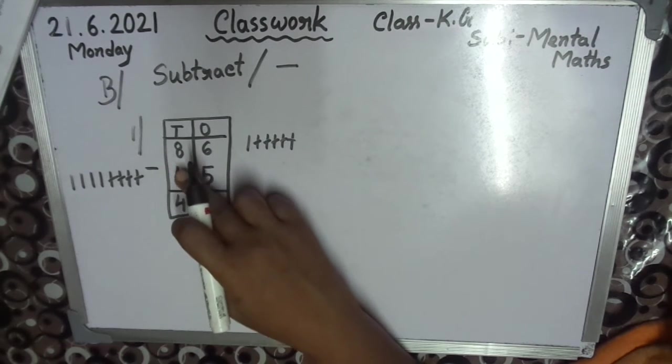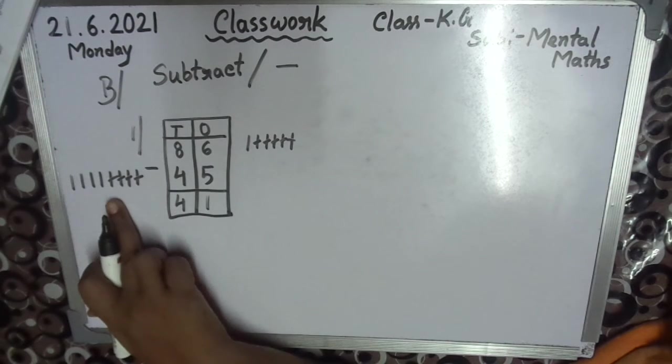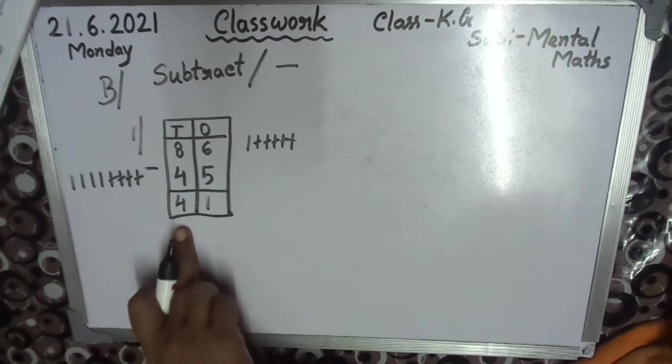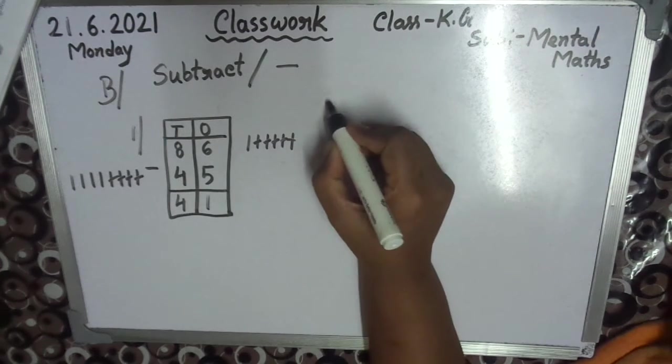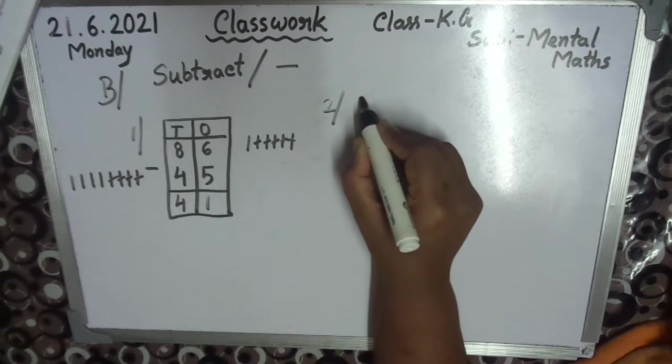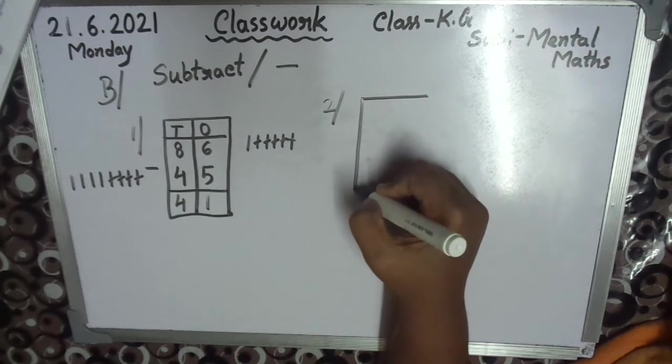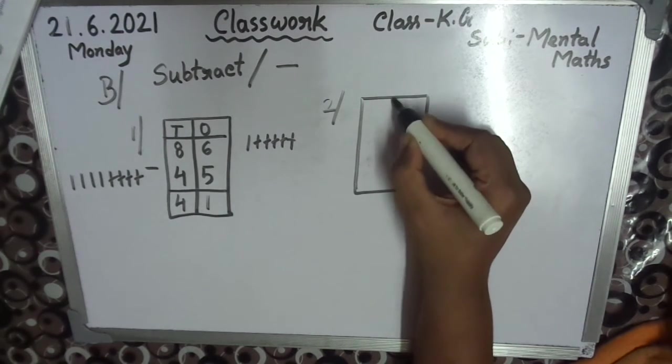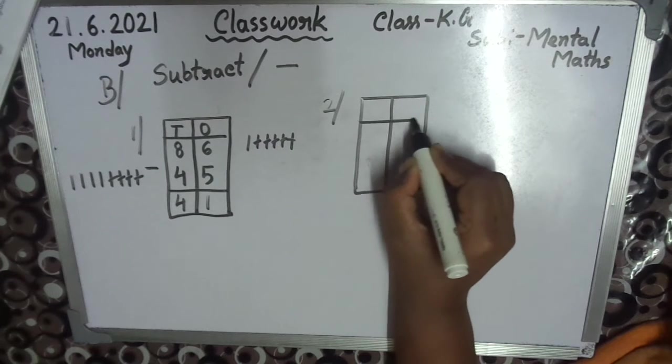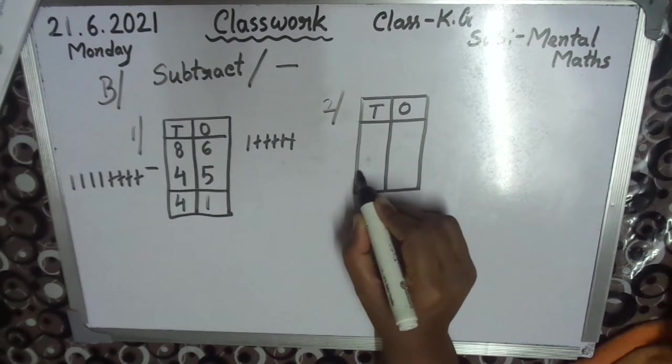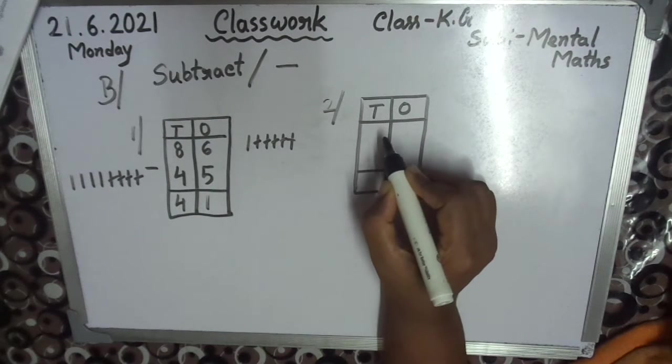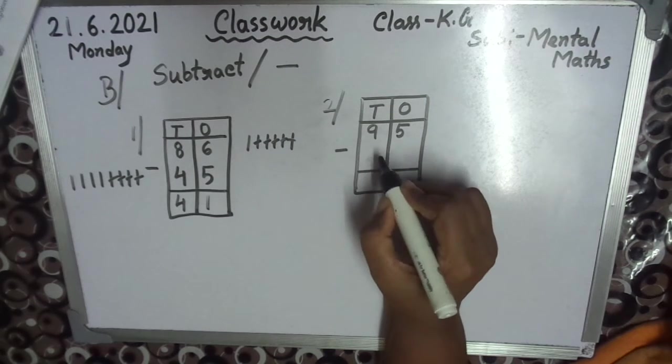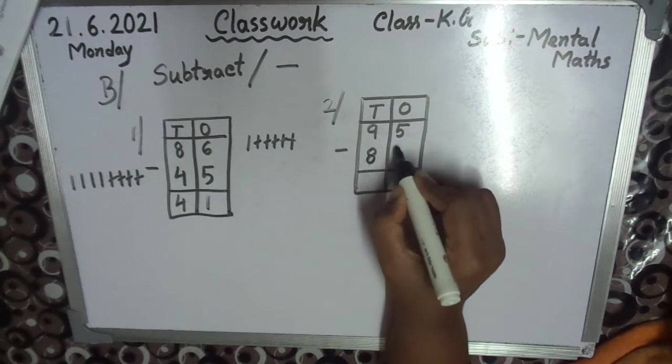Number 2. Tens, ones. Question 95, sign is minus, subtract, 84.